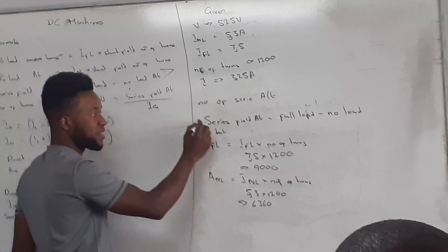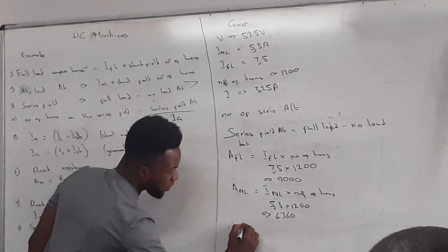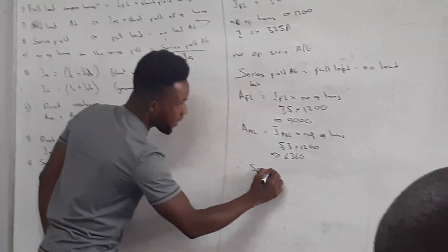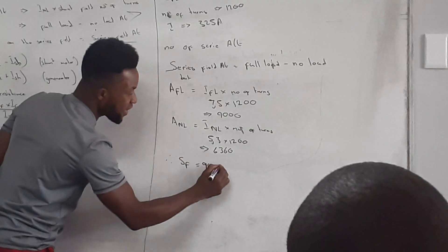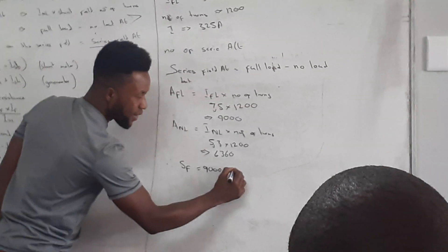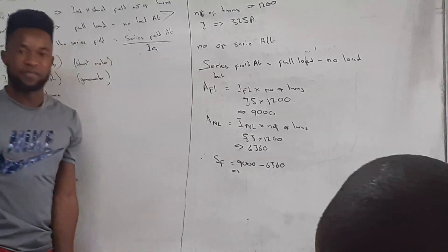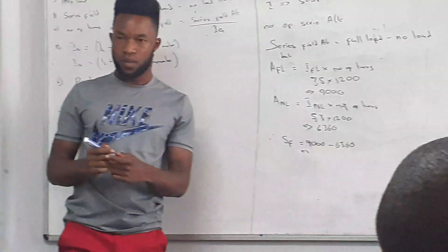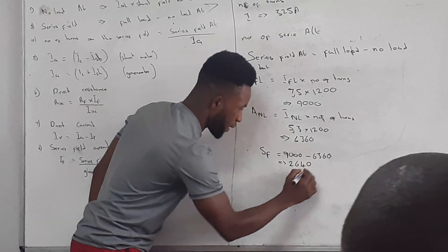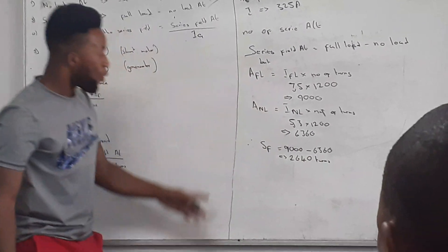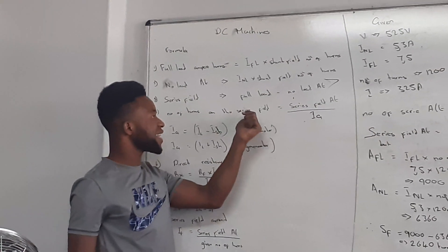So to get our series field AT, the formula gives us: AT_SF = AT_full_load minus AT_no_load = 9,000 minus 6,360 = 2,640. So our series field AT is 2,640.